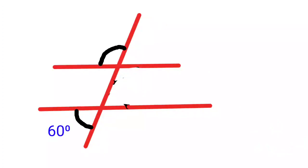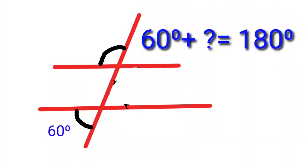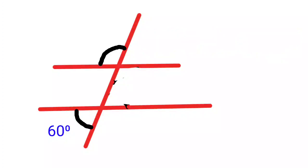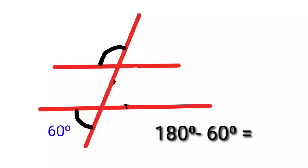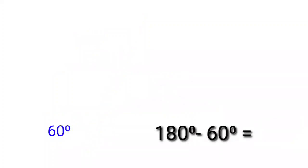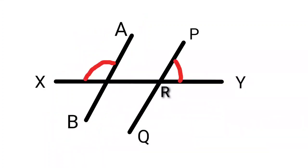Here one angle is given and you need to find the missing marked angle. The speciality of these angles is that they are co-exterior angles. We know that co-exterior angles are supplementary, so we subtract 60 degrees from 180. The answer is 120 degrees.